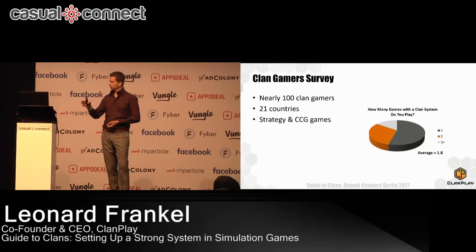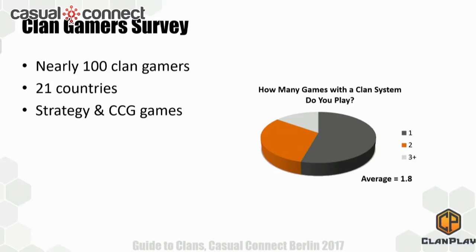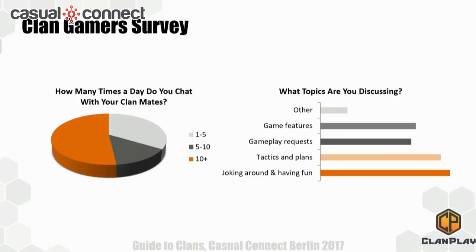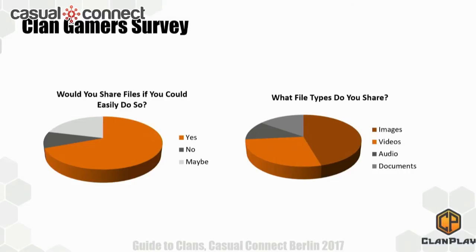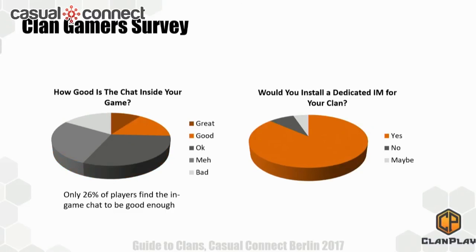When we were setting up Clan Play, we were serving players from 21 countries engaging in strategy and card collection games, and we came up with very interesting feedback. Players play an average of 1.8 games in parallel, they chat a lot with their friends, and most commonly they're joking around — not even about game content. As for who they prefer in their clan, they don't care much, and if they do, it's usually someone of a similar level or playing habits. Half of them don't share files with their clan, though many would if it were easy. The types of files they share are mostly images and videos.